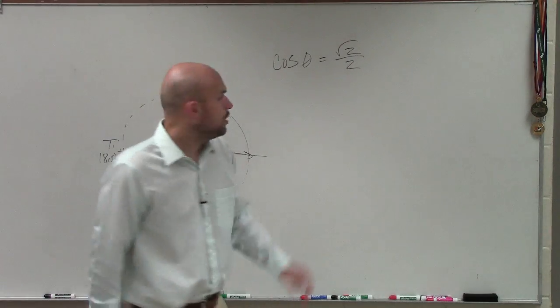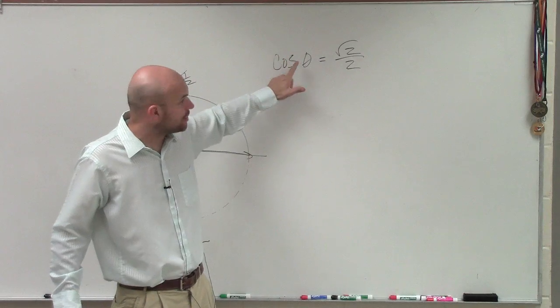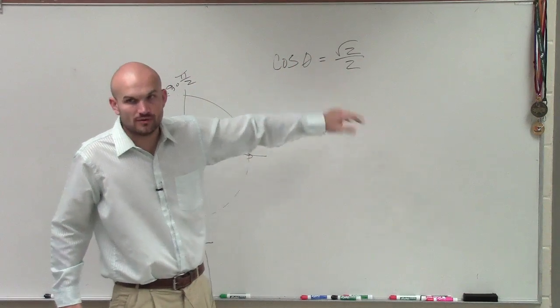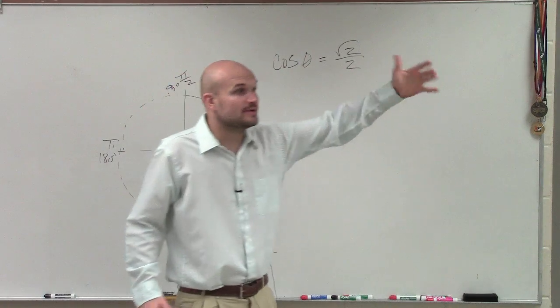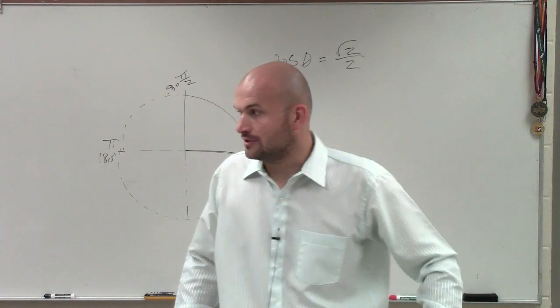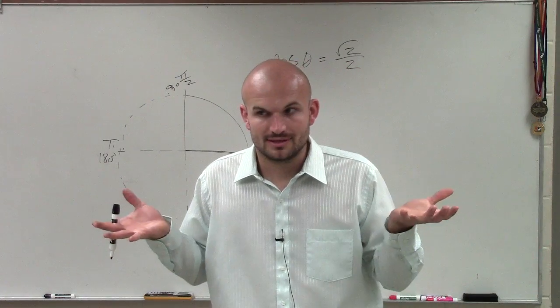We only care about the first quadrant. So now they're asking us, what is the angle? What is cosine of what angle is equal to square root of 2 over 2? Now is square root of 2 over 2 a point on the unit circle? Yes. So we know when we have a point on the unit circle that the cosine represents the x coordinate.